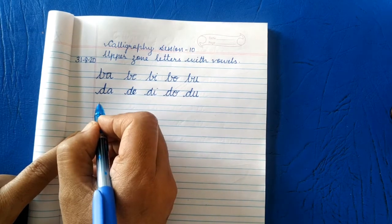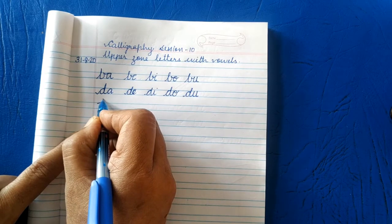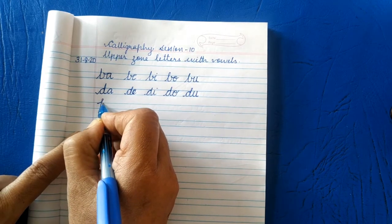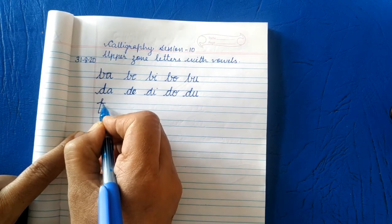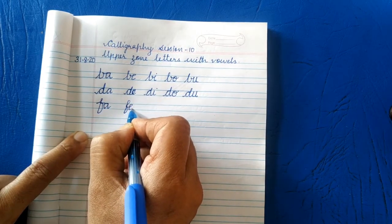Next letter you know that it is not upper zone or lower zone letters. This letter connects with all the lines. You start writing here, make a cut F, FA, FE, FI, FO and FU.